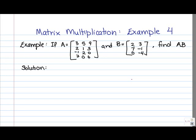So we know when we multiply a 4 by 3 times a 3 by 2, because the number of columns of A is the same as the number of rows of B, we'll be able to do the multiplication. The resulting matrix will be 4 by 2, because it's going to have the same number of rows as A and the same number of columns as B.